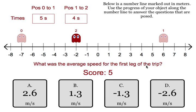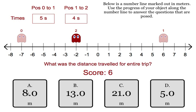They want the average speed for the first leg of the trip. Well, speed, you don't need to worry about direction, so it's just going to be 2.6.